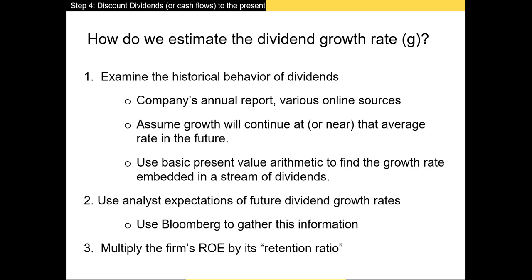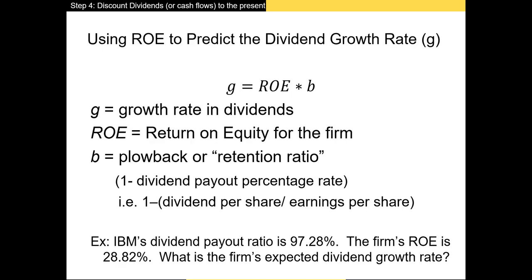Finally, you can multiply the firm's return on equity by its retention ratio to determine the growth rate. We estimate the retention ratio as one minus the dividend payout ratio, or just dividends divided by earnings per share. The larger the percentage of net income a firm pays out to shareholders, the smaller the percentage it has available to reinvest in new capital budgeting projects.